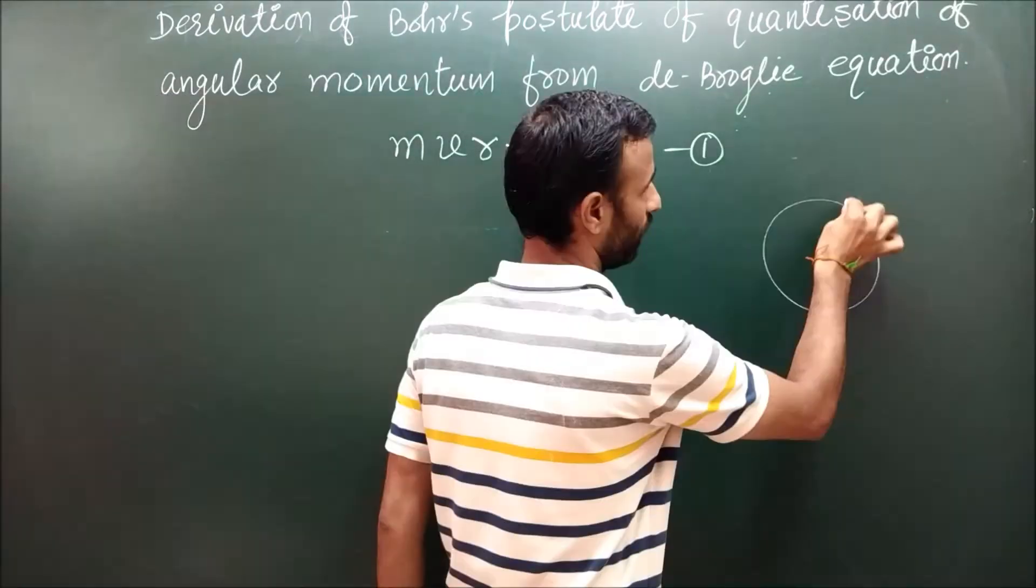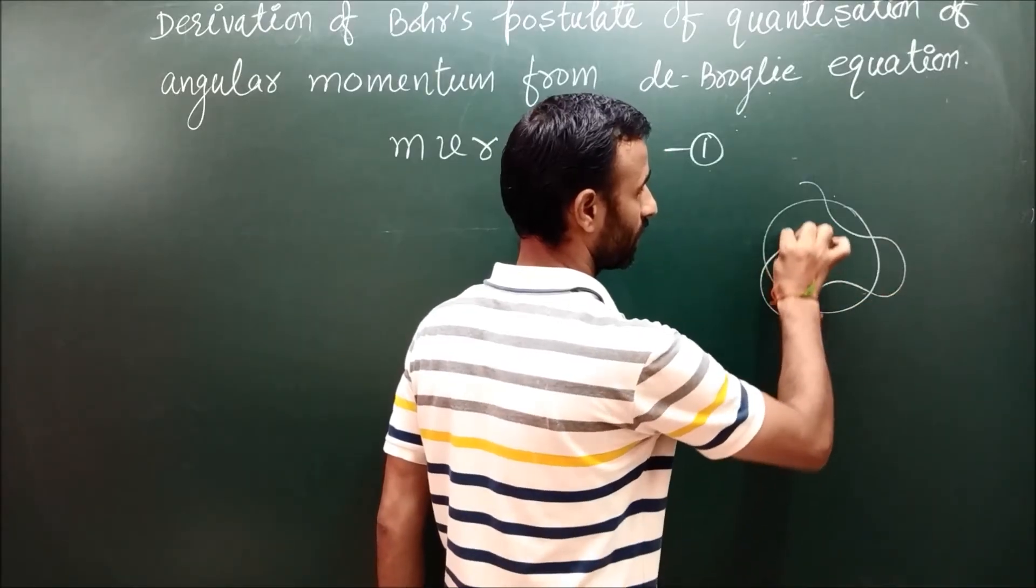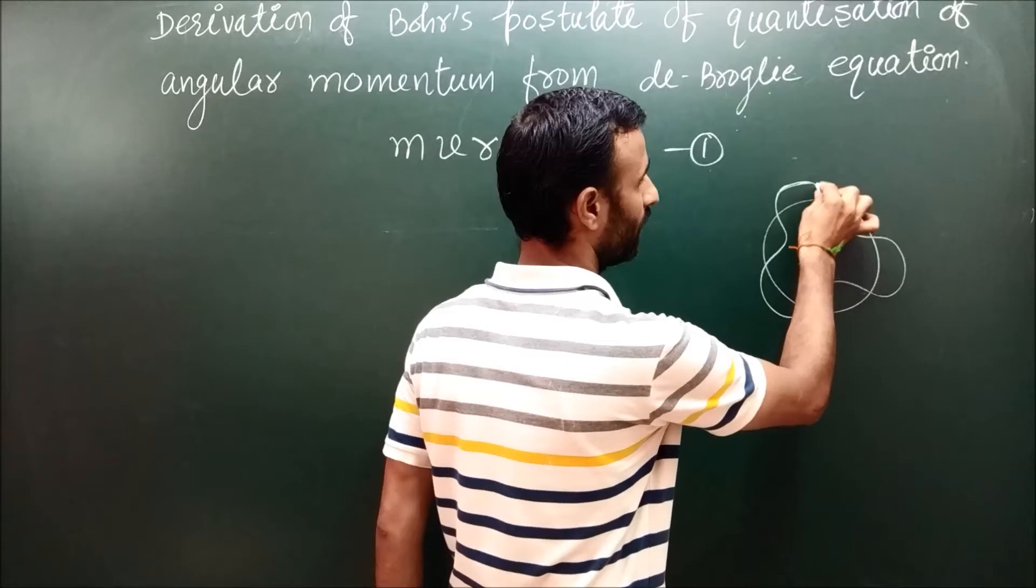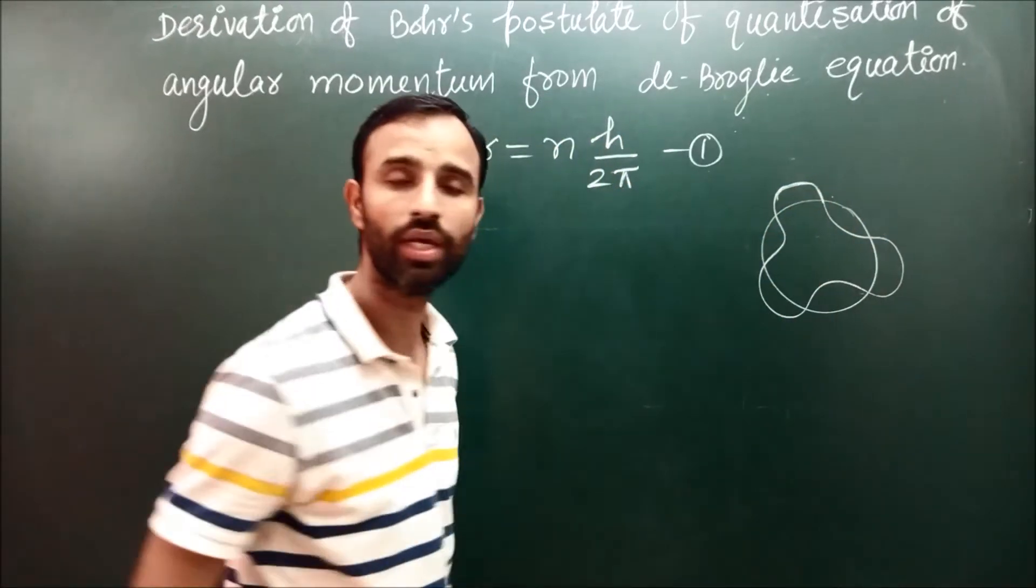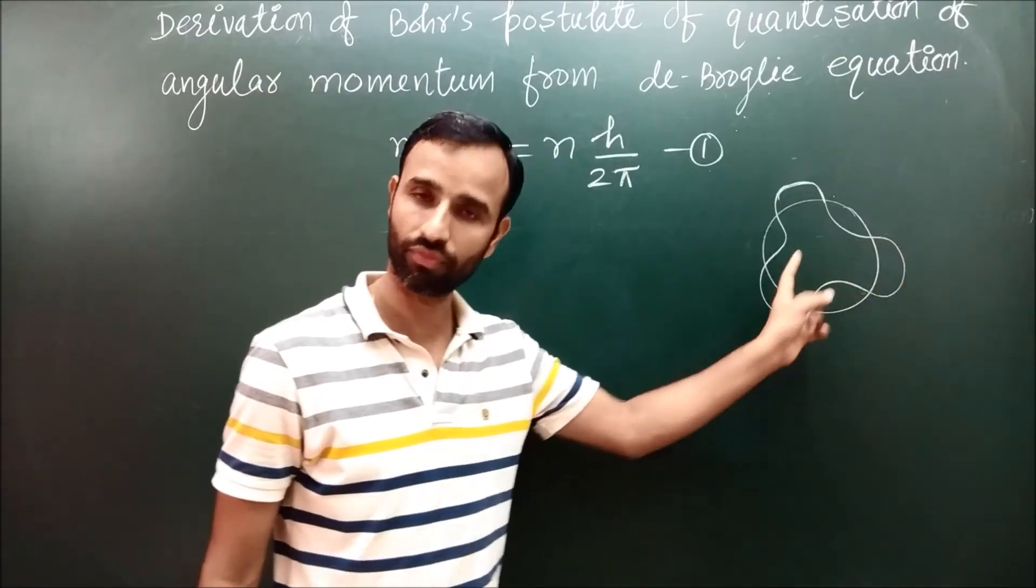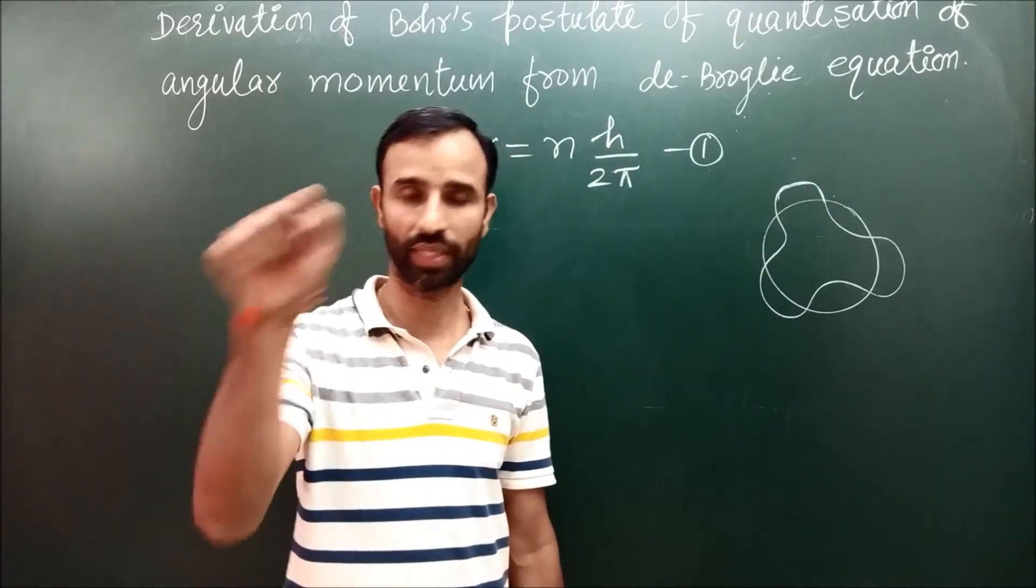If electron is a wave, wave moves like crest and trough. If two ends of the wave meet, then wave is called in phase. Then there is a regular series of crest and trough, and this is the way that electron can move in an orbit.